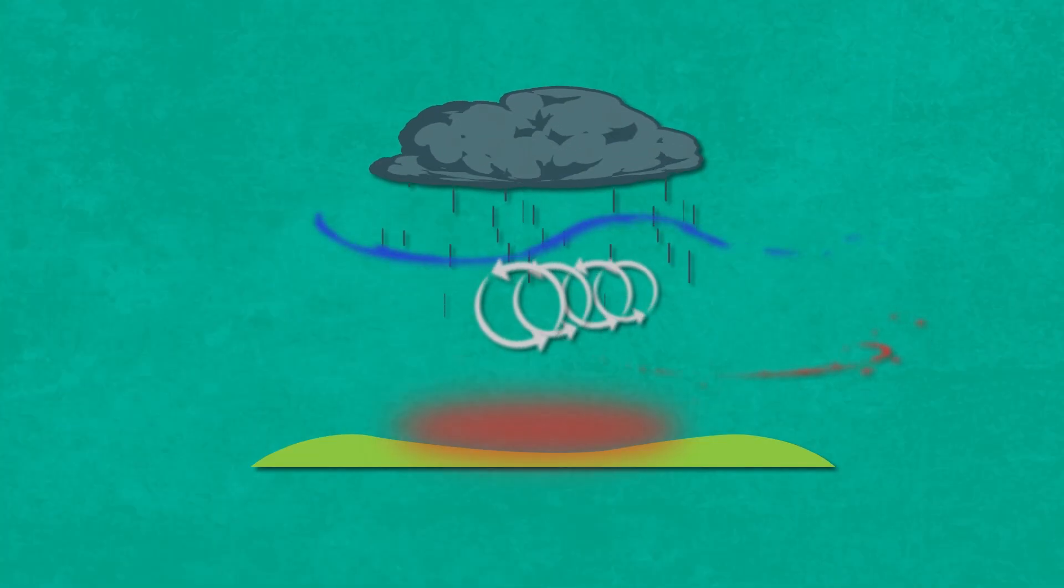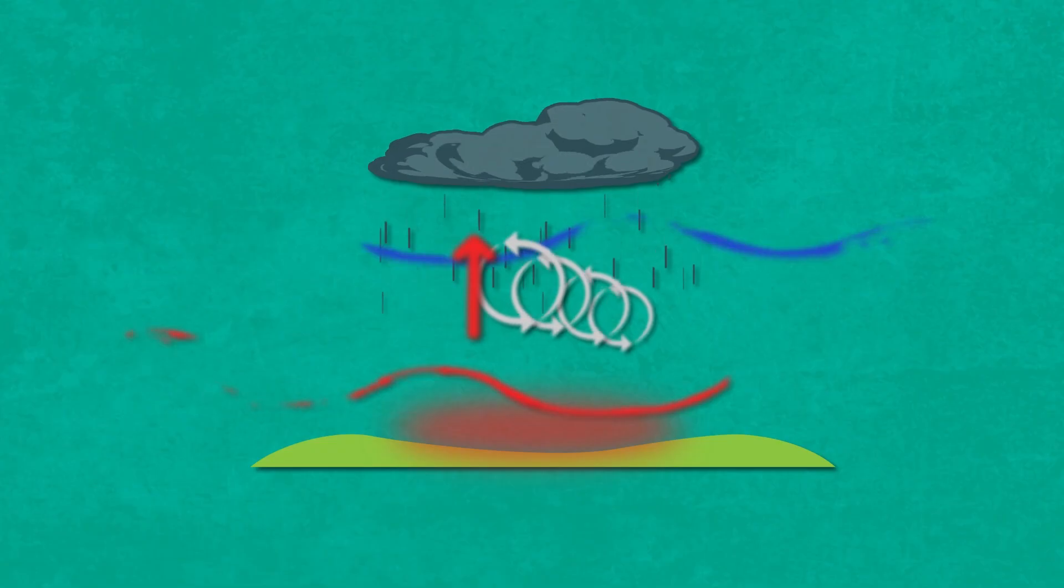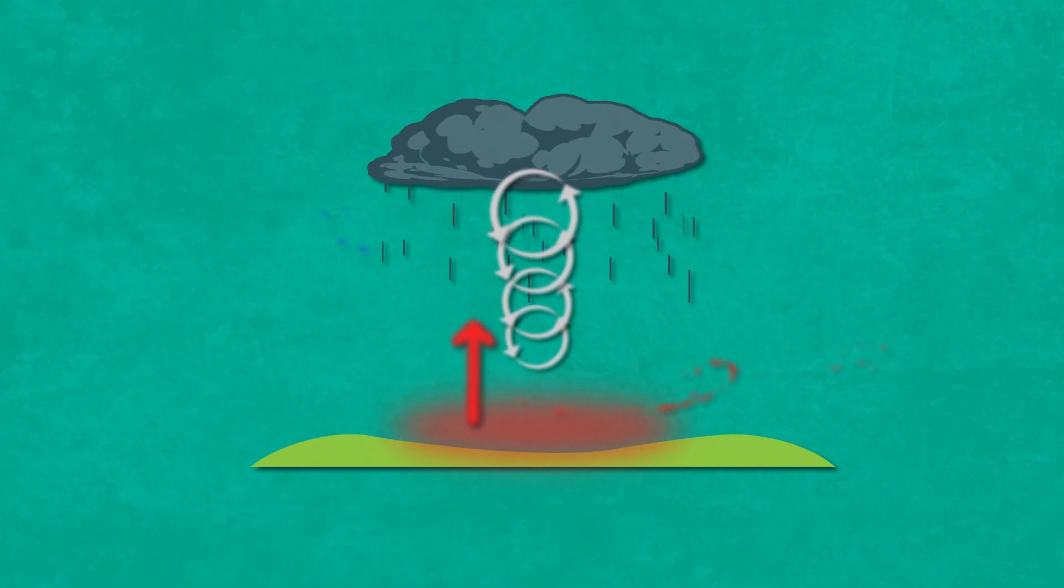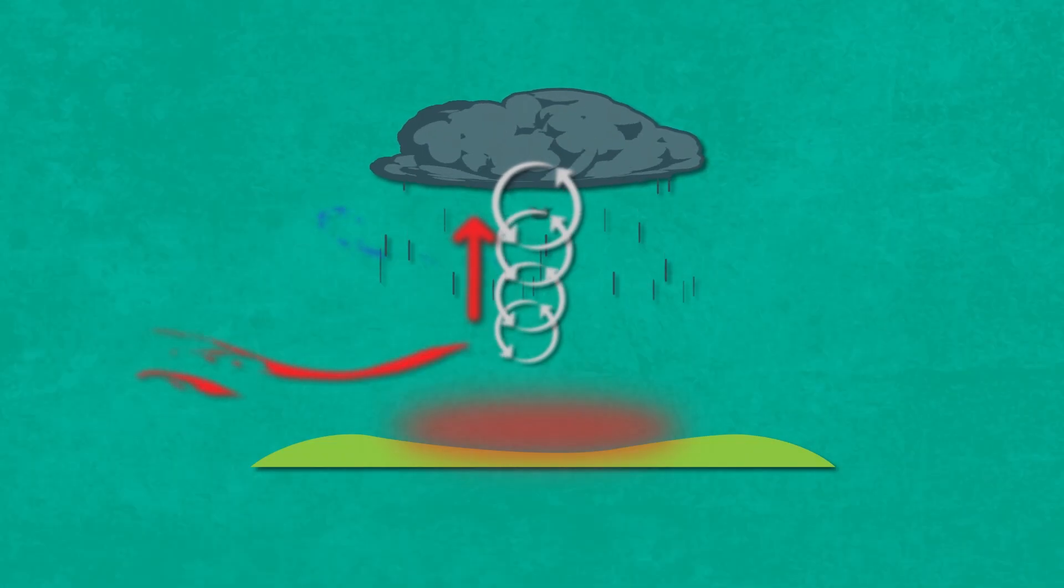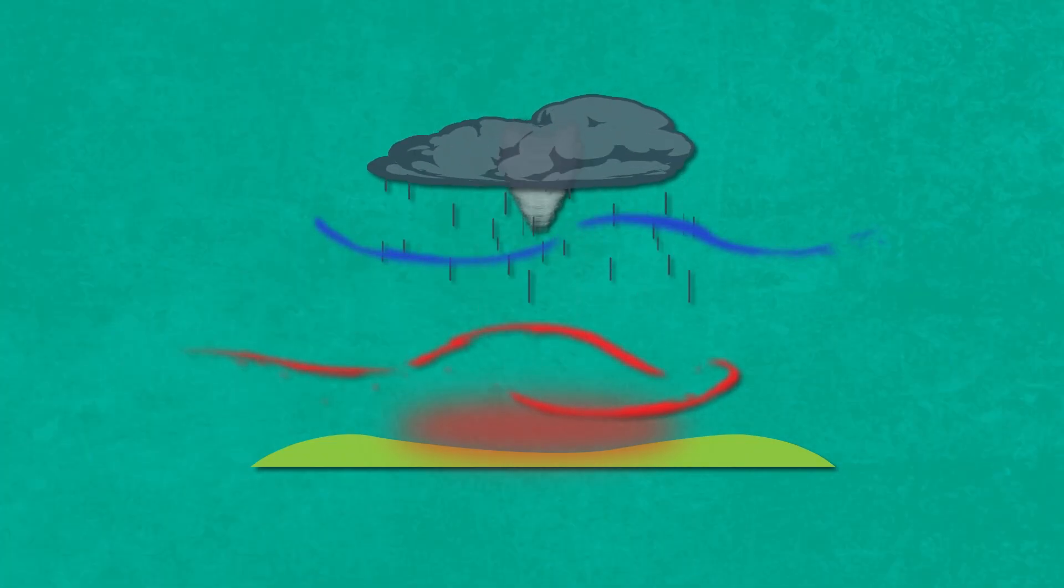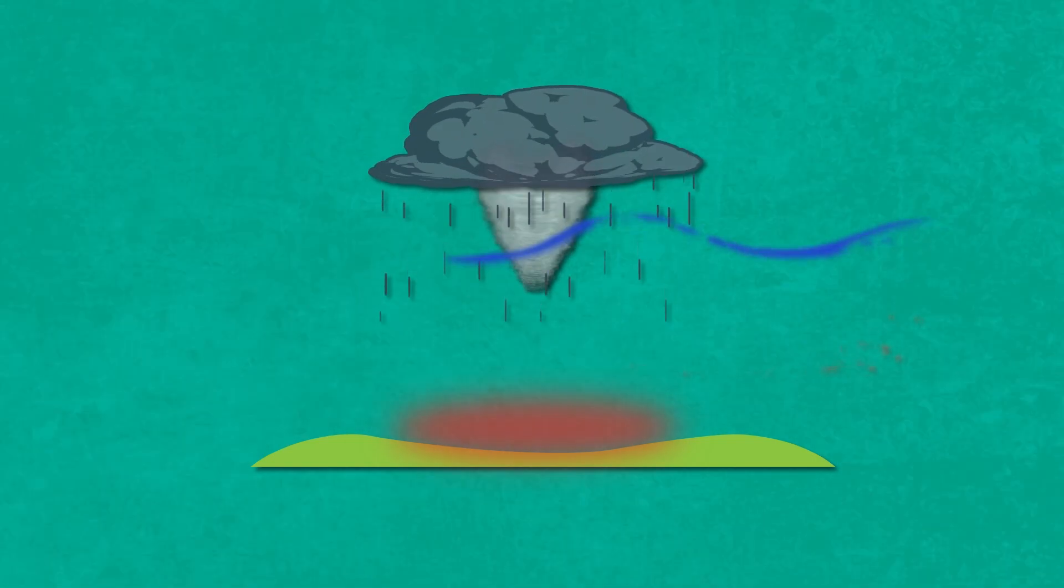The warm air rising up into a thunderstorm is known as an updraft. When the updraft rises and meets the horizontal rotation, it tilts until it's vertical. This not only increases the speed and the power of rotation, but it also drags the thunderstorm's clouds lower toward the ground. A thunderstorm with this spinning column is called a supercell, which will often lead to a tornado.